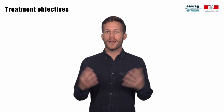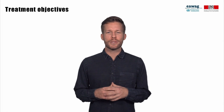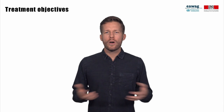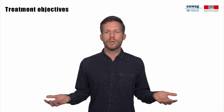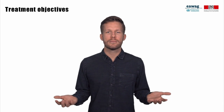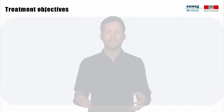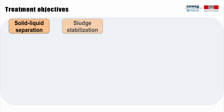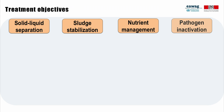You might be overwhelmed by the large number of treatment technologies presented here and just want to know: what technology do you need for drying of sludge or to inactivate pathogens? To answer this question, it is best to group technologies based on their treatment objectives: solid-liquid separation, sludge stabilization, nutrient management, and pathogen inactivation.